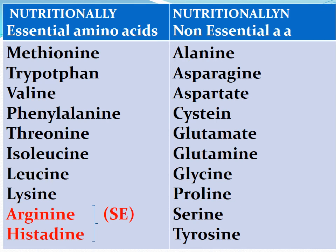Here you can see the classification of amino acids on the basis of nutritional requirement. Amino acids are classified into nutritionally essential amino acids and nutritionally non-essential amino acids. Nutritionally essential amino acids are methionine, tryptophan, valine, phenylalanine, threonine, isoleucine, leucine, lysine. Arginine and histidine are the semi-essential amino acids.